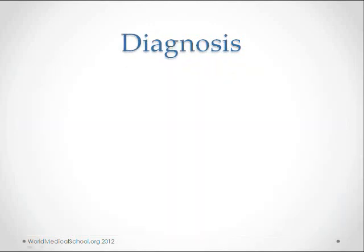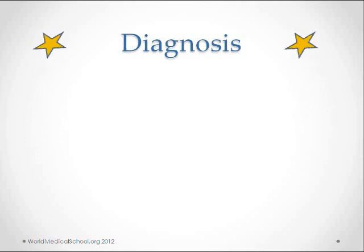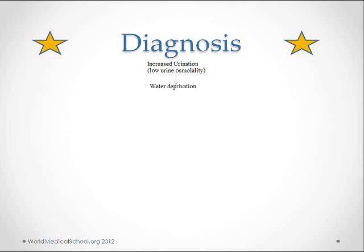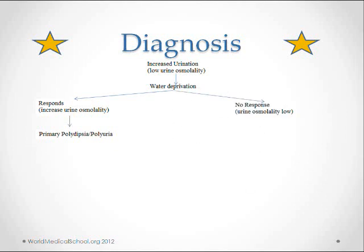It's important to know how to diagnose diabetes insipidus. The pathway on this slide is very high yield for the exam. When a patient presents with increased urination or low urine osmolarity, the first step is to deprive them of water — this is known as the water deprivation test. If the kidney responds by increasing urine osmolarity, then it is primary or psychogenic polydipsia. If after water deprivation the kidney does not respond and the urine osmolarity is unchanged, then the diagnosis is diabetes insipidus.